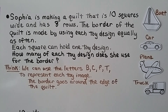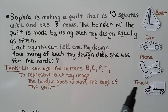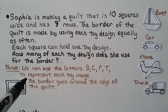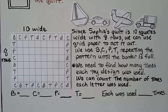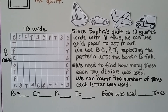Sophia is making a quilt that is 10 squares wide with 8 rows. The border uses each toy design equally often — one toy per square. We use B for boat, C for car, P for plane, and T for truck. The border goes around the edge of the quilt. Using grid paper 10 squares wide with 8 rows, we repeat the pattern B, C, P, T around the entire border.